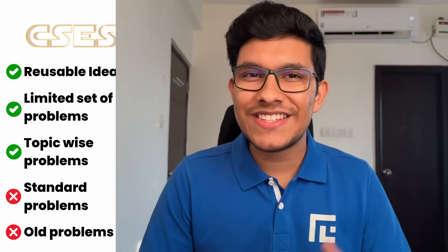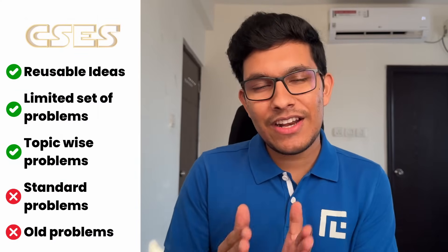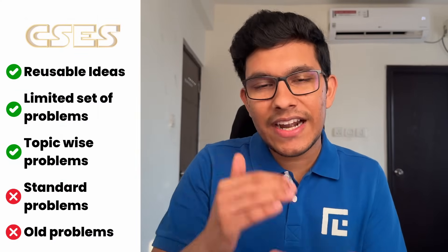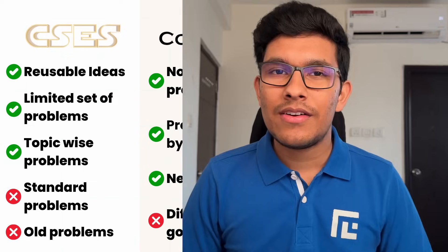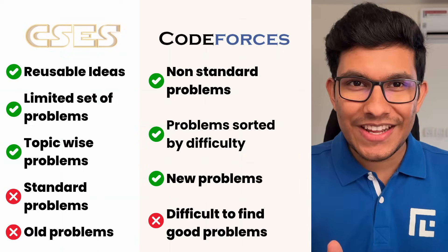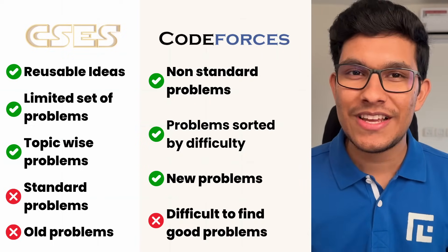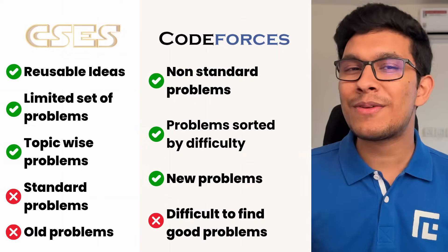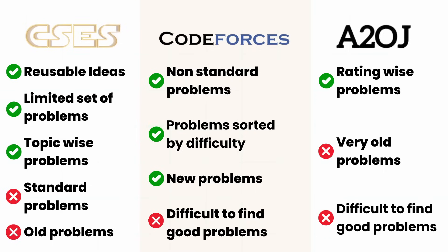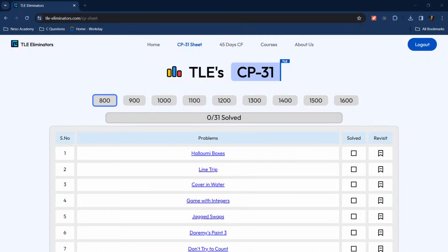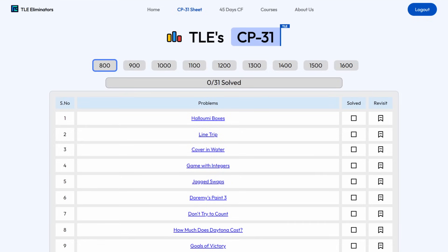When you look at the CSES problem set, it involves very standard ideas that help you learn a lot of concepts, but those problems are not that interesting. Codeforces problems, even though they use those same standard concepts, are much more interesting. The A2OJ ladder problems are very old — most of them are irrelevant today. To address all of these issues, I have come up with my own CP sheet, known as the CP31 sheet, which is perfect for two kinds of people: absolute beginners and people targeting to become Expert on Codeforces.